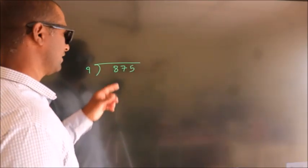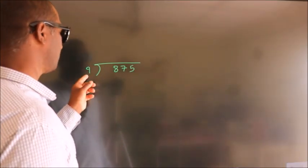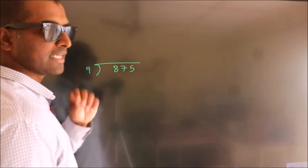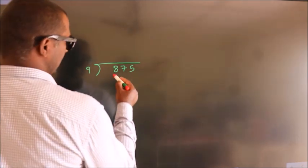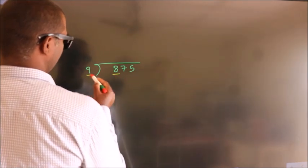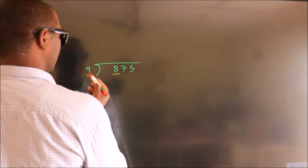How to divide 875 by 9. See, here we have 8, here 9, 8 smaller than 9.